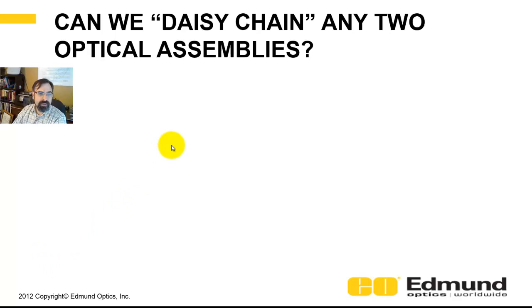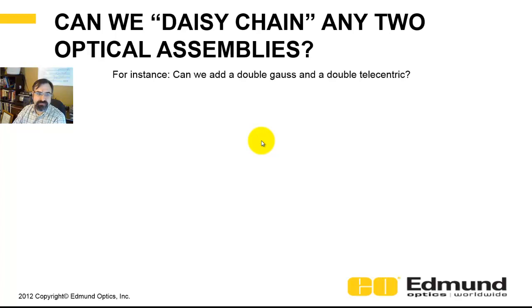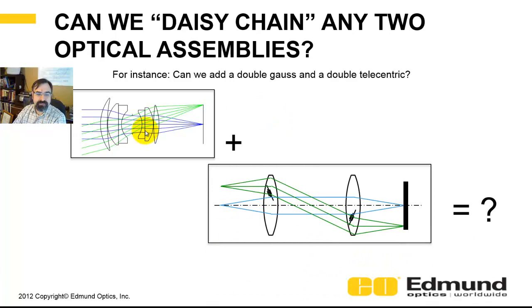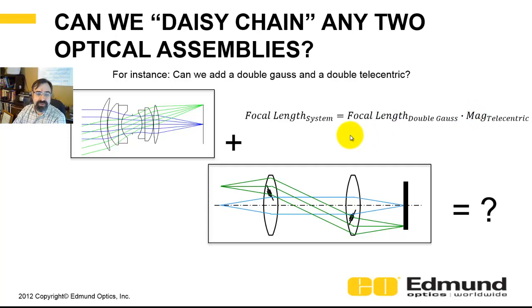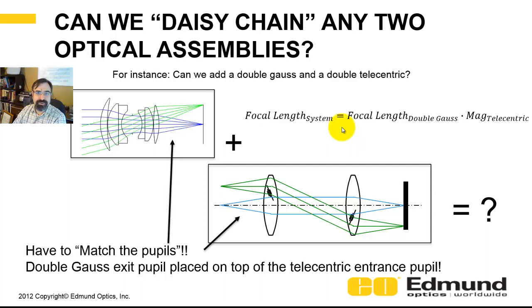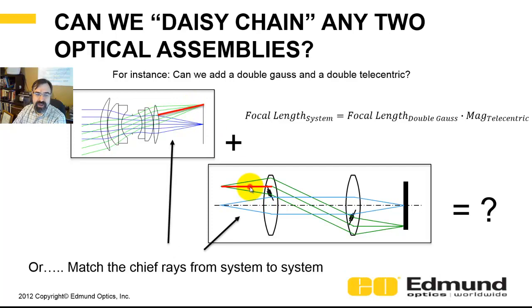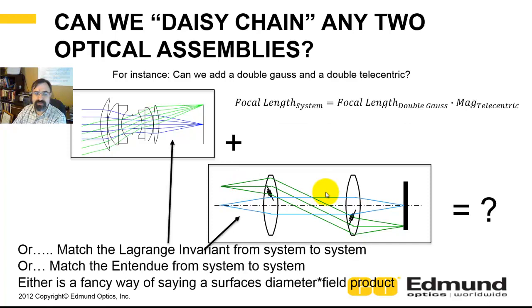Can we daisy-chain a double Gauss and a double telecentric system together? Here's the double Gauss and here's the double telecentric. The system focal length would simply be the double Gauss focal length times the magnification of the telecentric — but this only works if you match the pupils. In other words, you place the exit pupil of the double Gauss onto the entrance pupil of the telecentric. You want to match these chief ray angles — shown here in red — and notice they're not matched. You've got to match the Lagrange invariant.